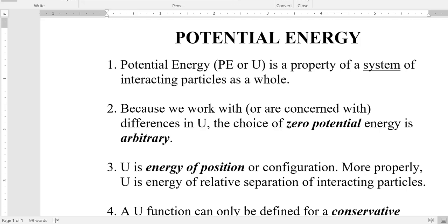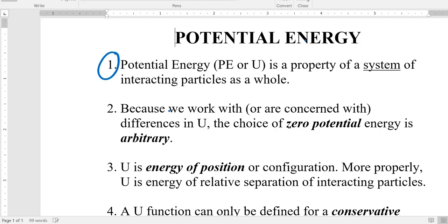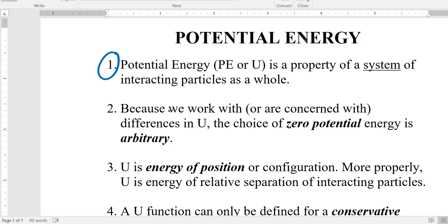So potential energy, the first thing here is it is energy of position, which means where a system of particles is at. And notice it says system. One thing by itself cannot have potential energy. It takes at least two objects together to have potential energy.